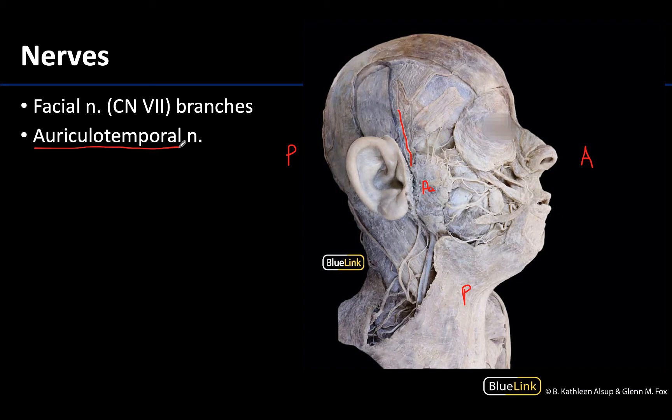This nerve is mostly an afferent nerve, serving the regions around the temporomandibular joint, anterior superior to the ear, and the external acoustic meatus. But it also transmits postganglionic parasympathetic fibers to the parotid gland from the otic ganglion, with those preganglionics originating in the glossopharyngeal nerve or cranial nerve 9. So there is a lot going on in this small nerve.